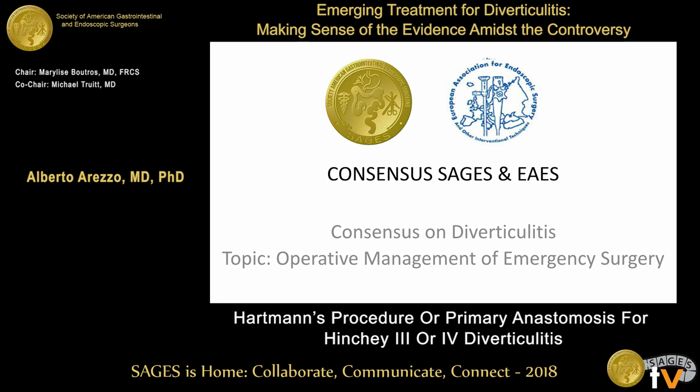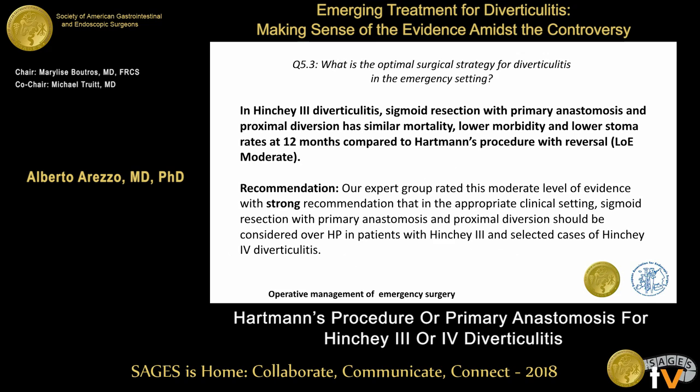Briefly about yesterday's consensus: the consensus stated that in Hinchey 3 diverticulitis, sigma resection with primary anastomosis and proximal diversion has similar mortality, lower morbidity, and lower stoma rate at 12 months compared to Hartmann's procedure with reversal. The expert group made a strong recommendation that in the appropriate clinical setting, sigma resection with primary anastomosis and proximal diversion should be considered over Hartmann procedure in patients with Hinchey 3 and selected cases of Hinchey 4 diverticulitis.